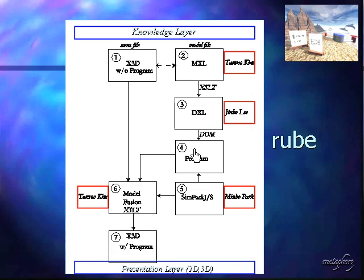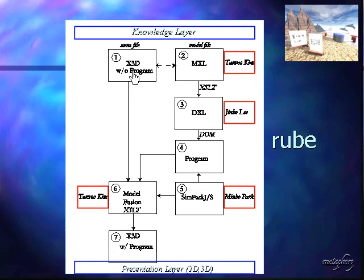Ultimately, a program is built in either Java or JavaScript with the assistance of SympactJS. Using SympactJS and the translation from MXL to DXL, the model is translated into Java or JavaScript. We have X3D without a program, and a program separately. These two are combined in model fusion, creating X3D with a program — allowing for an interactive, executable environment in X3D.